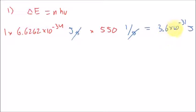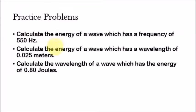So that's pretty simple — we're saying one quantum within this wave, which has a frequency of 550 Hz, has an energy of 3.6 times 10 to the minus 31 joules. Now let's look at a slightly harder problem: calculate the energy of a wave which has a wavelength of 0.025 meters. This is a little more difficult because we're not given the frequency. However, from the previous video we know how to calculate the frequency given the wavelength. So we'll first calculate the frequency, and then plug it into our formula.